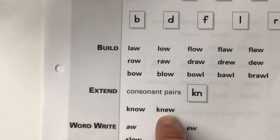And this is the word knew. I knew you were going to get this one right. E-W says ooh, and the K-N just says the N sound. The Ks are silent. Say this word.